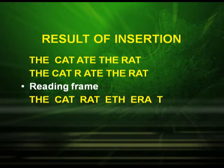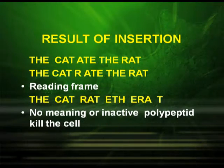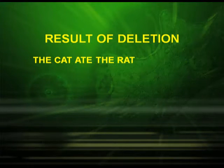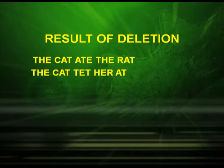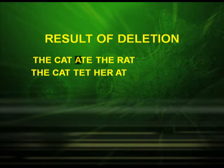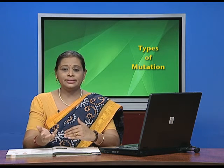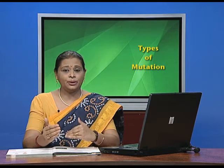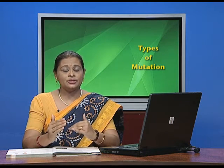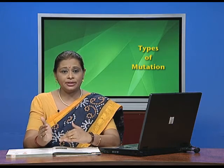Say after 'the cat' you inserted R. So the reading frame becomes: T-H-E, C-A-T, R-A-T, E-T-H, E-R-A, T — does it mean something? No, it is meaningless. That means it is going to produce an inactive polypeptide that might kill the cell. Now let us see the result of deletion. Write the sentence 'the cat ate the rat' and remove A. The reading frame becomes: T-H-E, C-A-T, T-E-T, H-E-R, A-T — does it mean something? No, again it is meaningless. That means it produces an abnormal polypeptide because of the change in the reading frame — a total change in the reading frame.